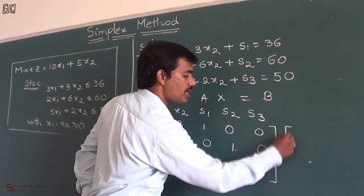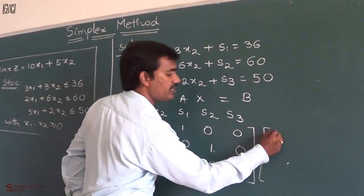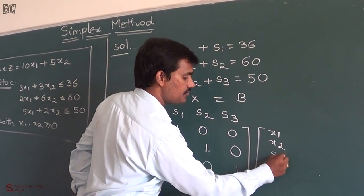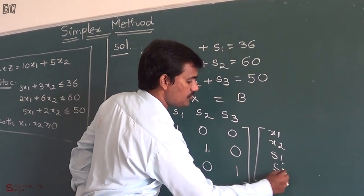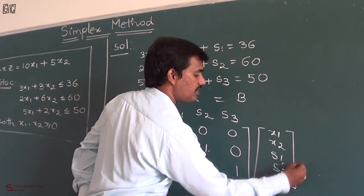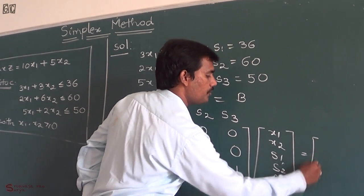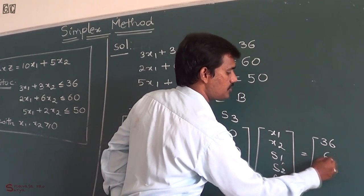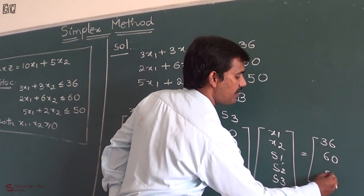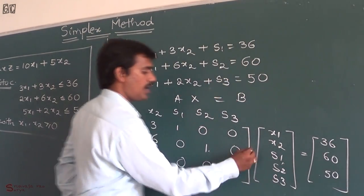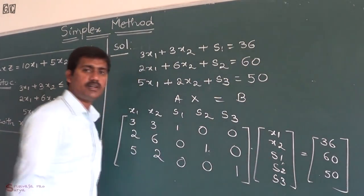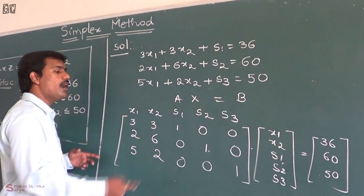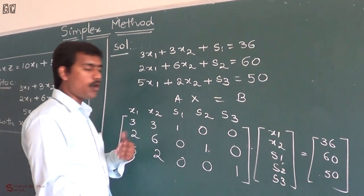So we have x1, x2, s1, s2, s3 with x equal to b, where b is 36, 60, and 50. These are the standard form of the matrix, with 3 rows and 5 columns. And b has 5 rows and only one column.